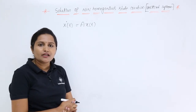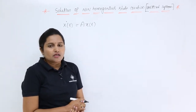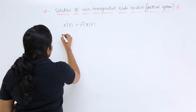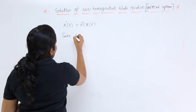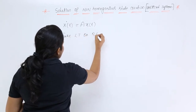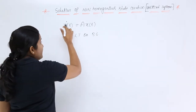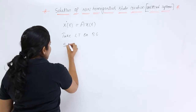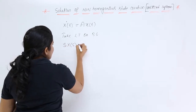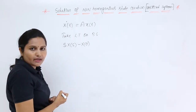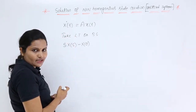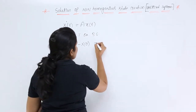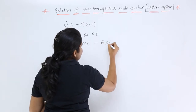Finding the solution means we need to find the value for x(t). To do this, we take the Laplace transform on both sides. Taking the Laplace transform of d/dt of x(t) gives s·X(s) - x(0), and the right-hand side becomes A·X(s).